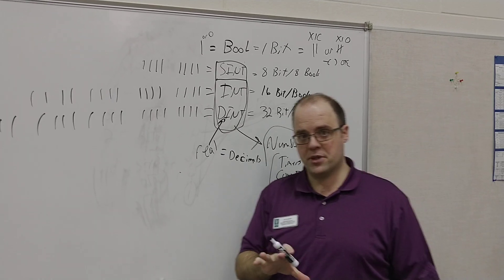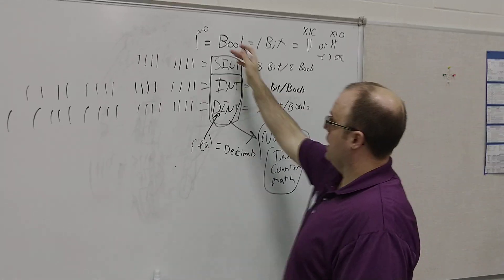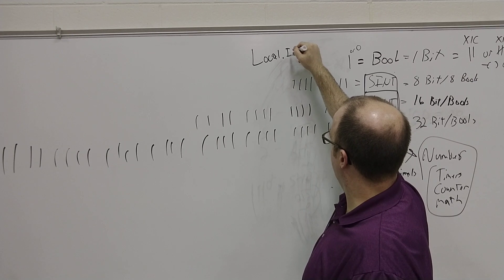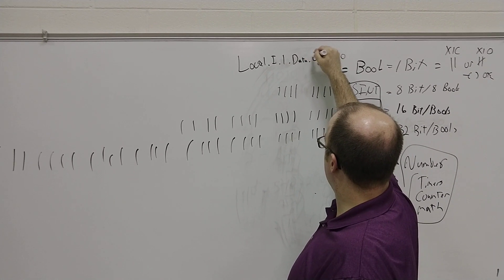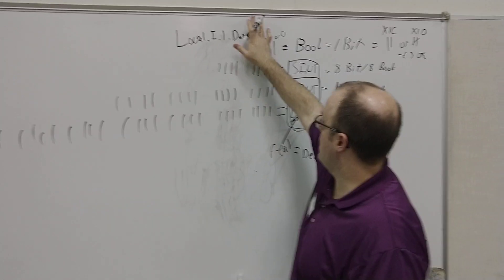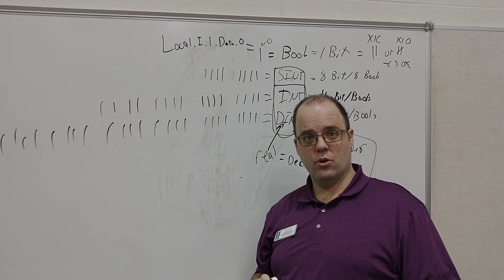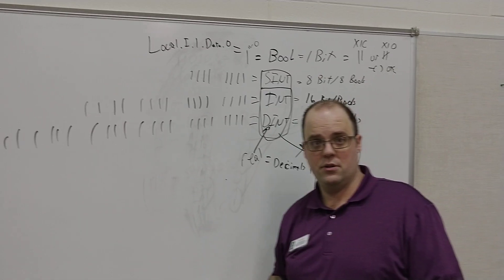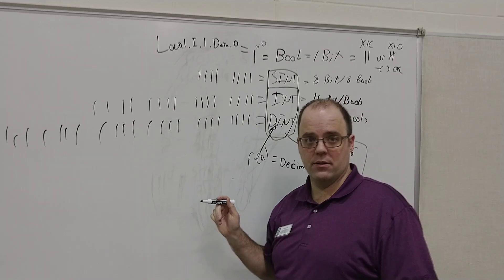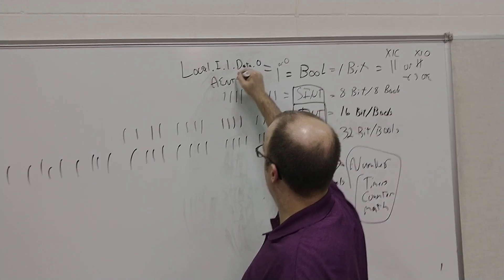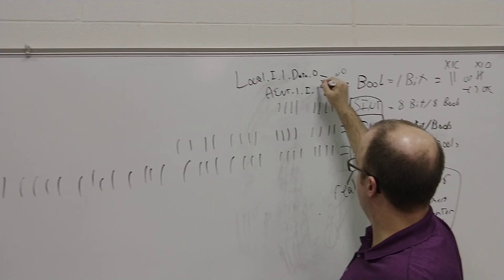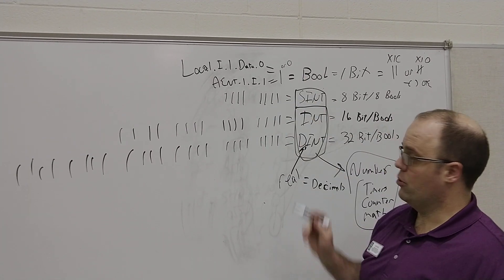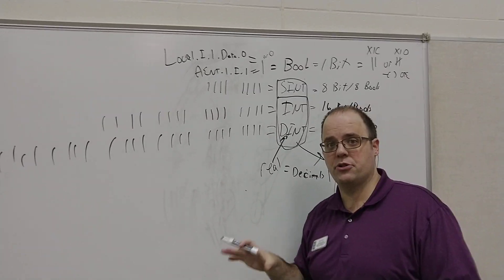You may get an error that says 'data type error' because you're putting something like an integer into an XIC or an XIO. So if I have local:I1 data.0, that's a bool. If I just have local:I data, that's going to be a SINT or an INT. So if you don't have that bit address on the end and you try to program an XIC, you're going to get errors. Those AENT.1.I.1 style addresses are bools as well. So keep all that in mind as you start programming.